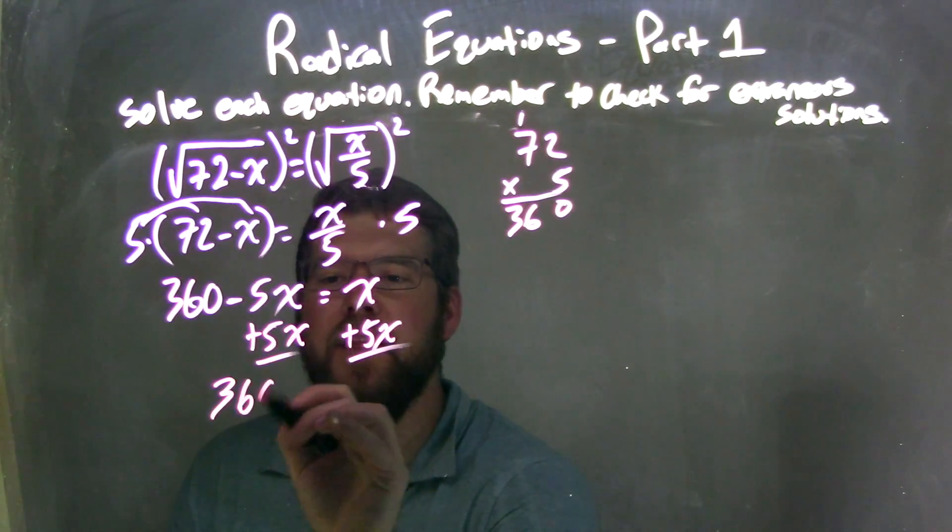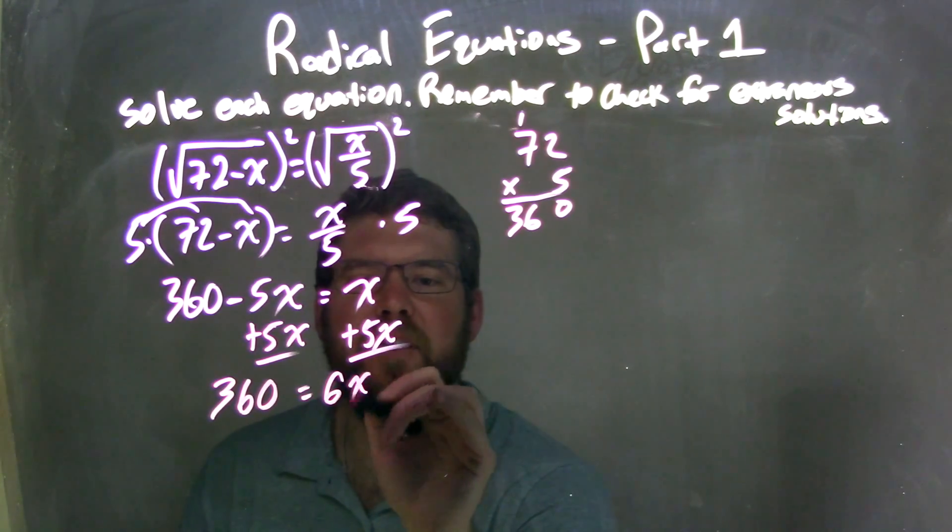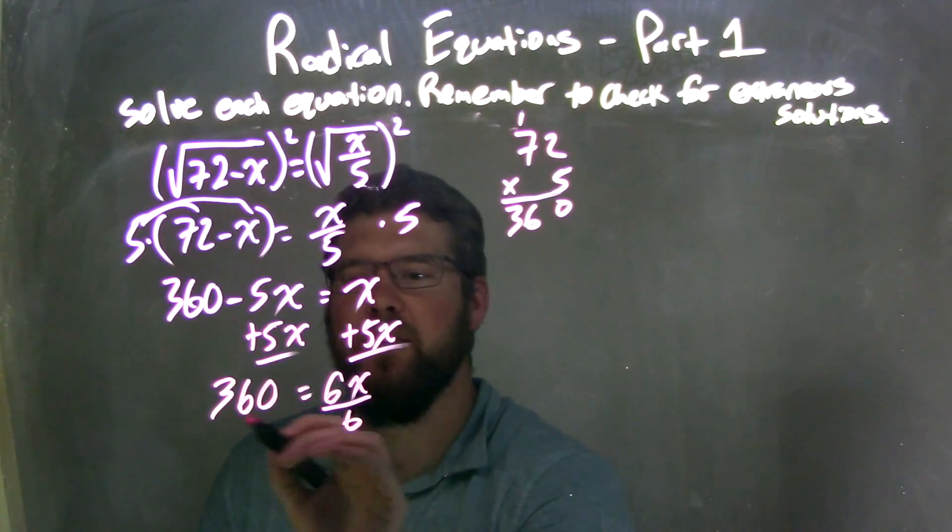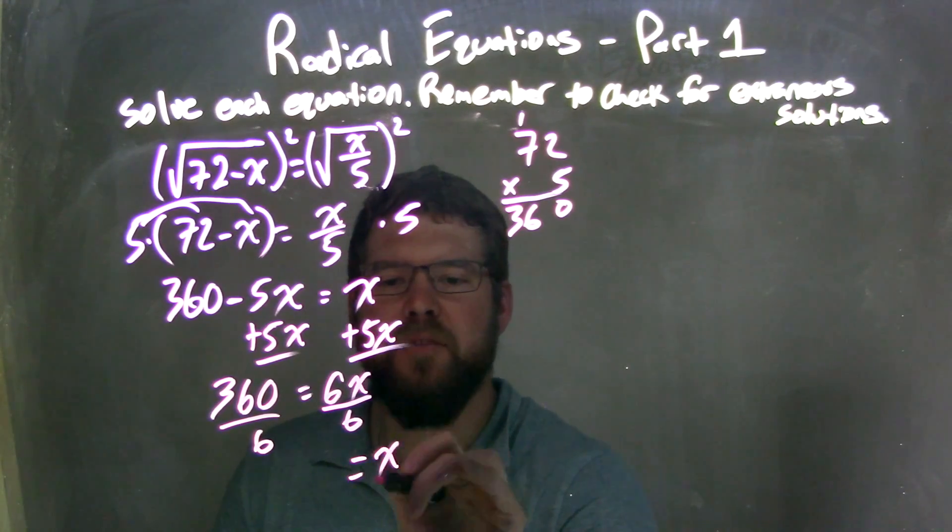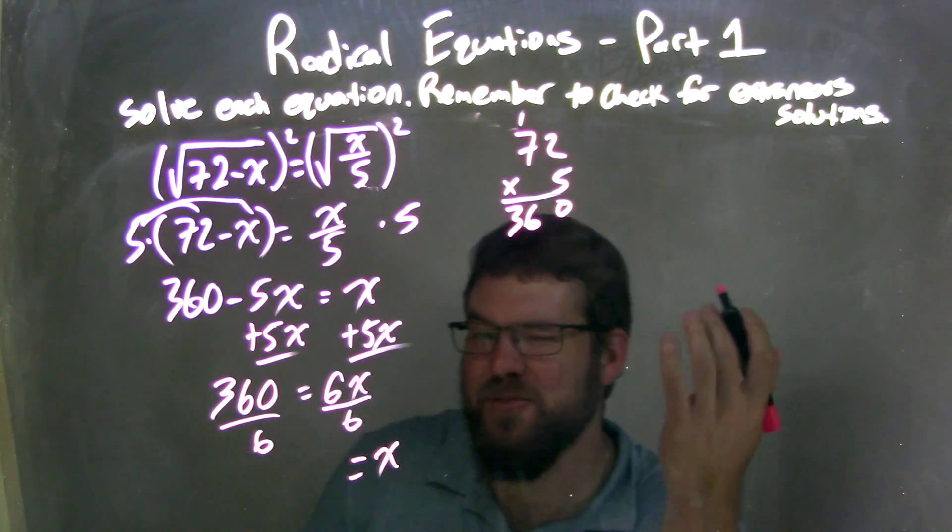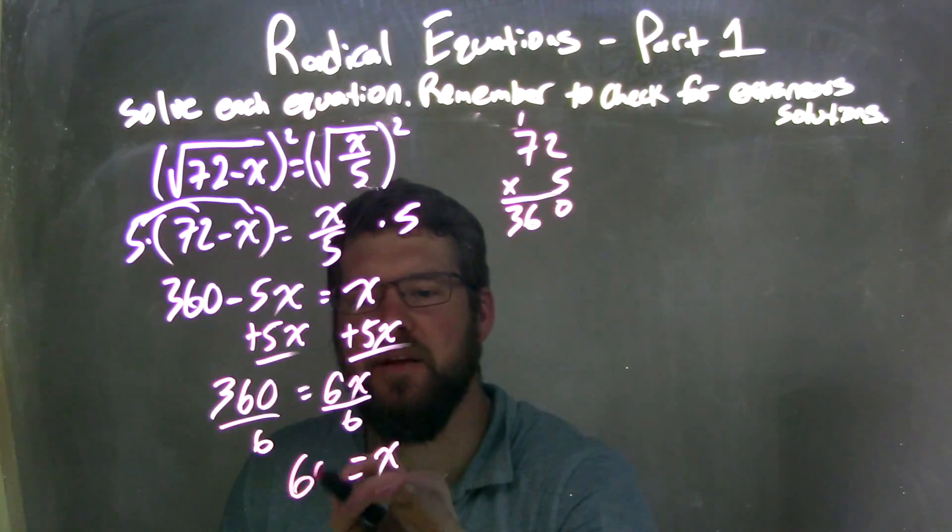Leave me with a 360 on the left and 6x on the right. Divide both sides by 6, and that comes out to be 360 divided by 6 is really just 60.